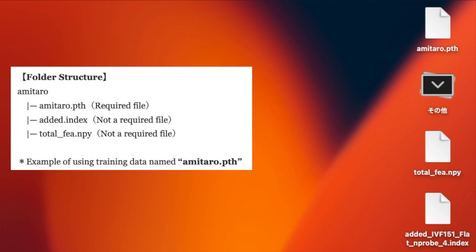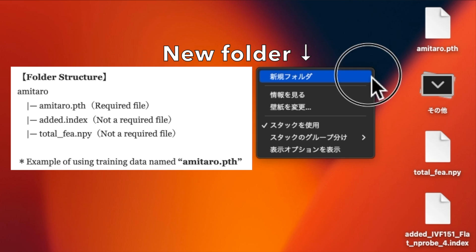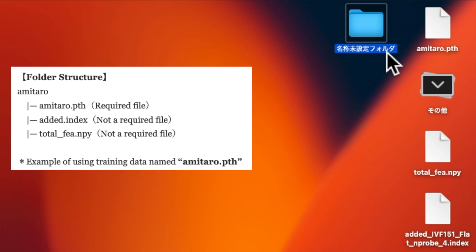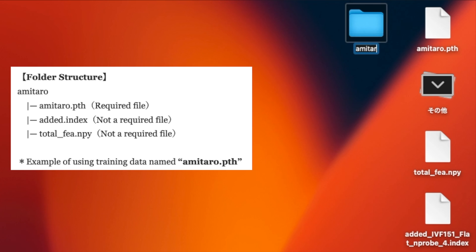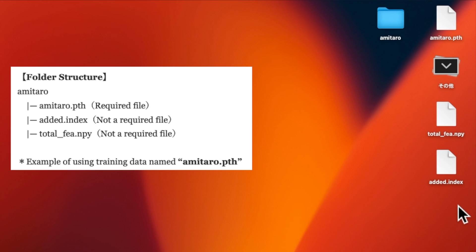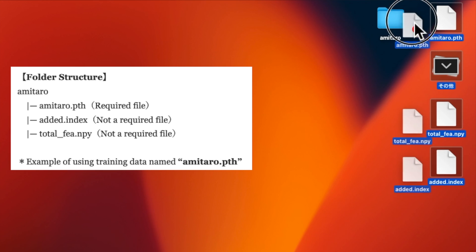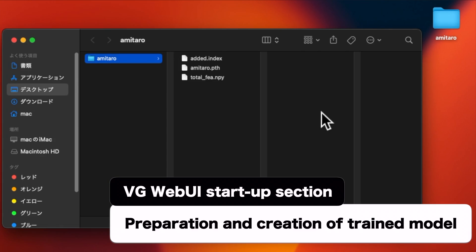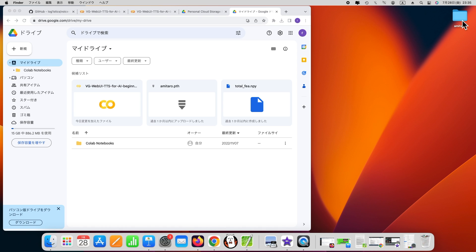After downloading the various files, create a folder with the same name as the trained model's PTH format and place the files in the folder. This time, I chose the name Amatero, which is a 1-byte alphanumeric name. Note that the index file named 'added' here should be renamed added.index as shown in the video. Upload the folder containing the trained model and other data to Google Drive in My Drive.